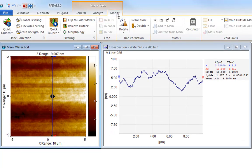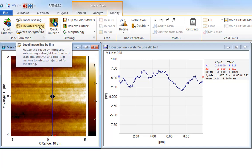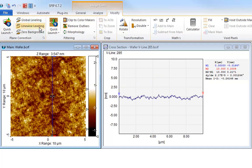The cross-section profile shows the height drift along the y-axis. To correct for the drift, we use the linewise leveling option on the Modify ribbon tab. This will fit and subtract a straight line from each scanline in the image.